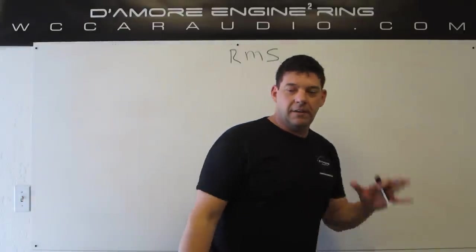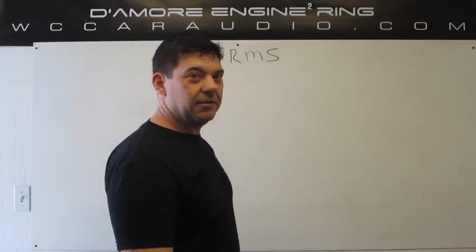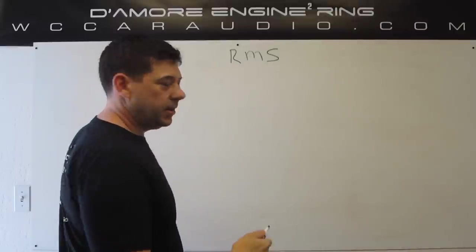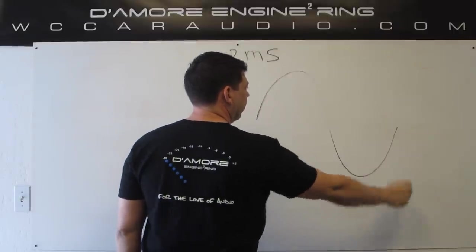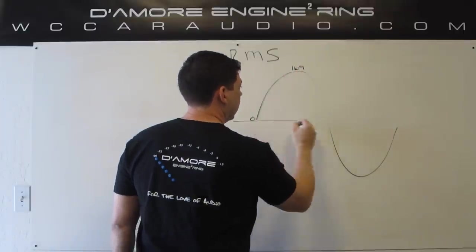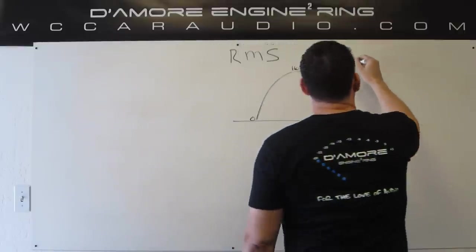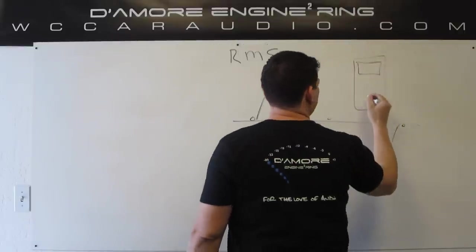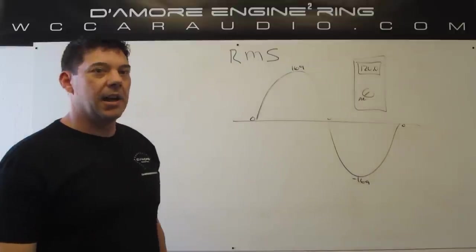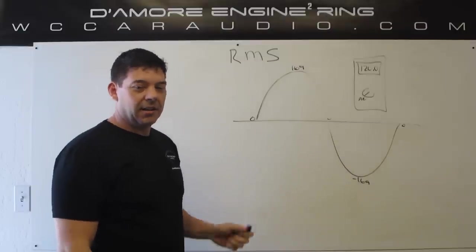Hey guys, Tony DeMoore here from DeMoore Engineering. Welcome to video 5. We're going to talk about RMS — we need to understand what this means before we get into anything deeper. In the last video I was talking about what would happen if you plugged the scope into the wall socket and said that you would see a sine wave, and that if this is 0 volts here, this would be about 169 volts at the peak, 0 again, so it's about minus 169, back to 0. If you were to take your DMM and stick it into the wall socket and set it to AC, it's going to say around 120 RMS. So what does this RMS mean? How is it figured out? That's what we're going to get into today.